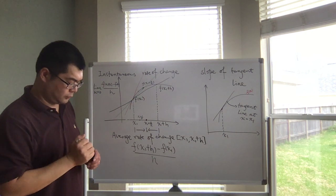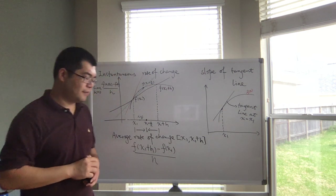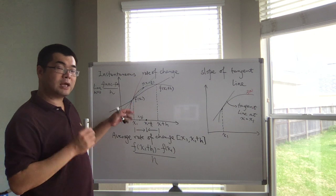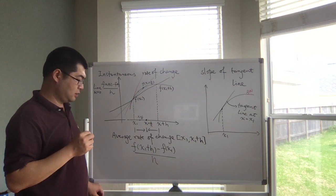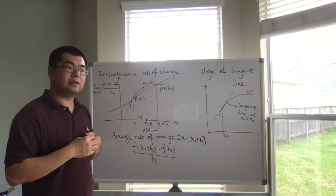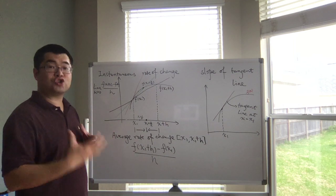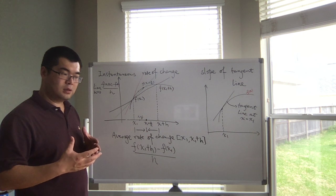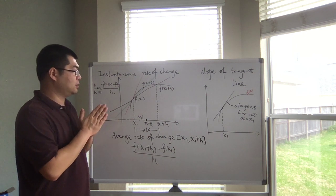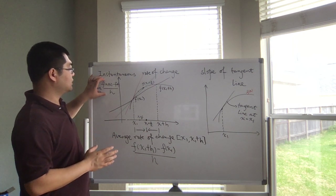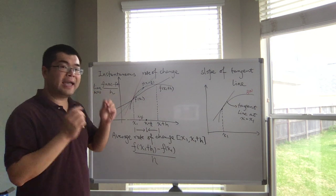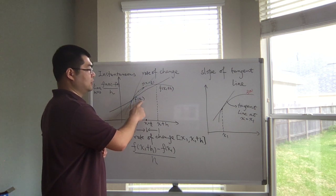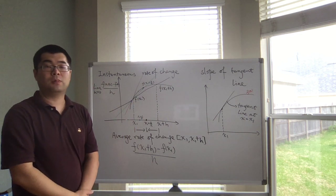We also have another name for the slope of the tangent line at x equals x1. Linking it to the idea of the average rate of change, this limit stands for the instantaneous rate of change at x equals x1.